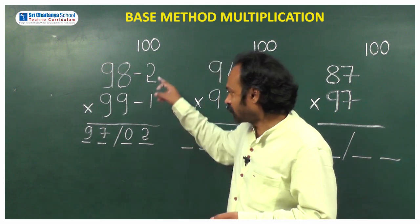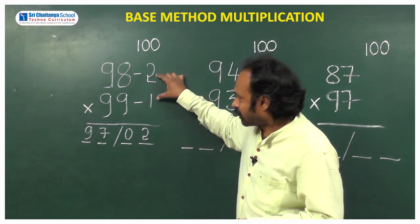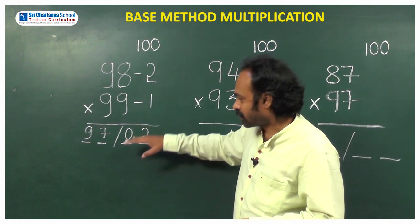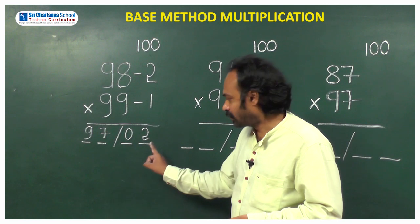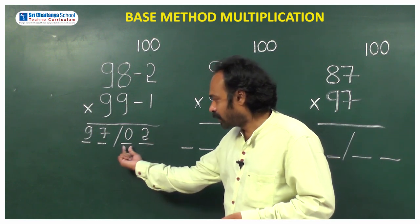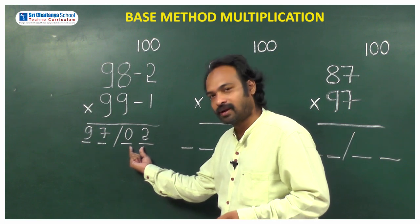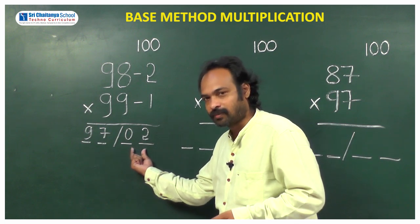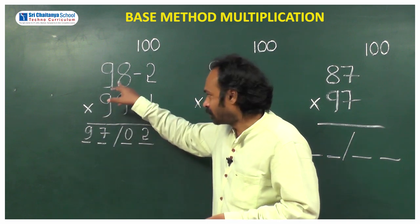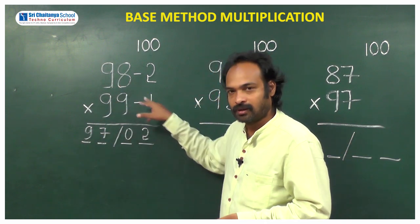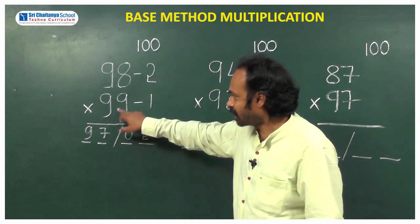What are the steps involved here? First you will find the difference between 100 and the given numbers. Then you are taking the product of these two numbers. Write those values here. If you get a single digit number, place zero before that number. If it's a double digit number, you can write directly. Now diagonal subtraction: 98 minus 1 is 97, or 99 minus 2 is 97.